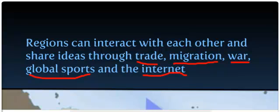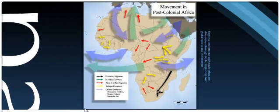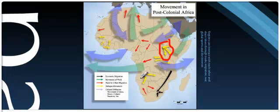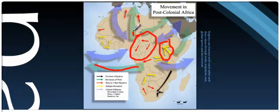That's what spatial diffusion is — the movement of ideas, things, and culture from one place to another. Here we can see that people have moved for many different reasons. Yellow means that they moved because they were refugees escaping war. Red means that they moved from the country to the city. These big green arrows mean they moved in search of work. Wherever people moved, they engaged in spatial diffusion.